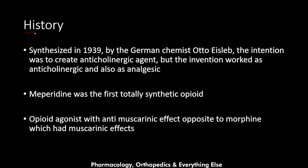Starting with the history of meperidine: it was first synthesized in 1939 by the German chemist Otto Eislem. The intention was to create an anticholinergic agent, but the invention worked as both anticholinergic and as an opioid analgesic. Meperidine was the first totally synthetic opioid to be synthesized, and it is an opioid agonist.